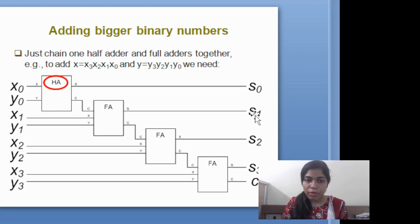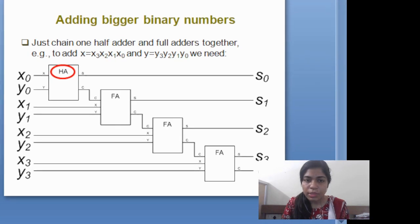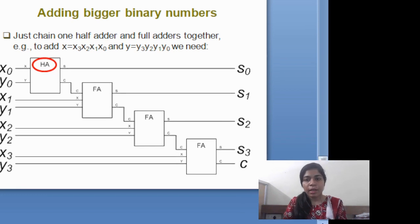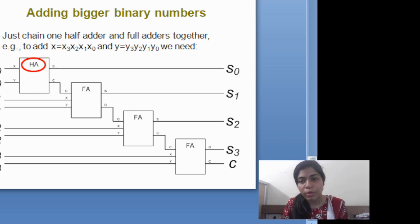The outputs will be S0, S1, S2, S3, and C is the carry output. These are the outputs and these are the inputs: X0, X1, X2, and X3 for the first number, and Y0, Y1, Y2, and Y3 for the second number. At the output, we will get the sum, which will be S0, S1, S2, S3, and carry.